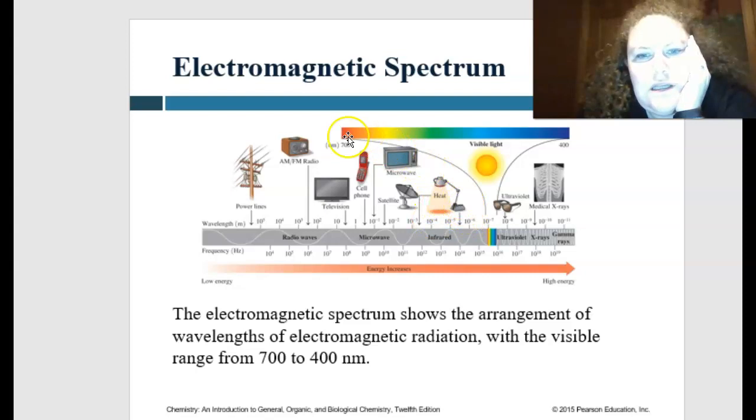But you can see that over to the left, we have electricity, power lines, radio waves, television waves, cell phone waves, microwaves, satellite waves, irradiant heat. And then on the other side of the spectrum, we have x-rays and ultraviolet radiation.